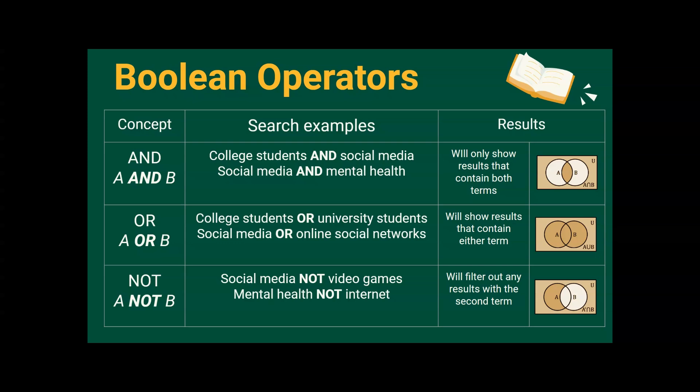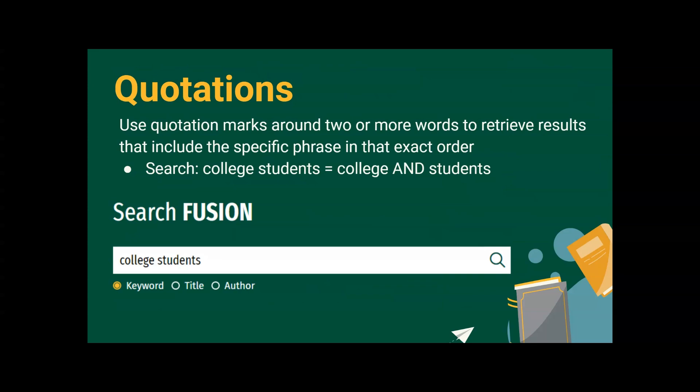AND NOT, which tells the search engine that you want to find information about the first search term but nothing with the second, excluding any results with that term and narrowing your search. Many search engines will automatically put an AND between your search terms.